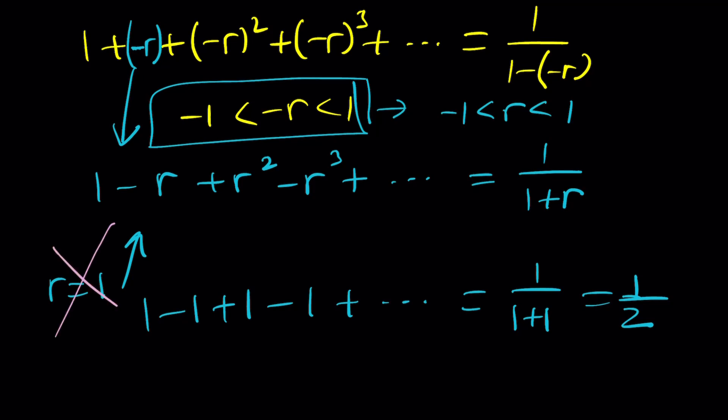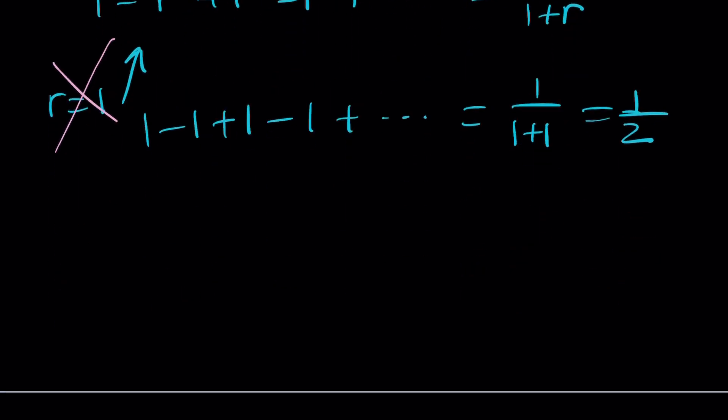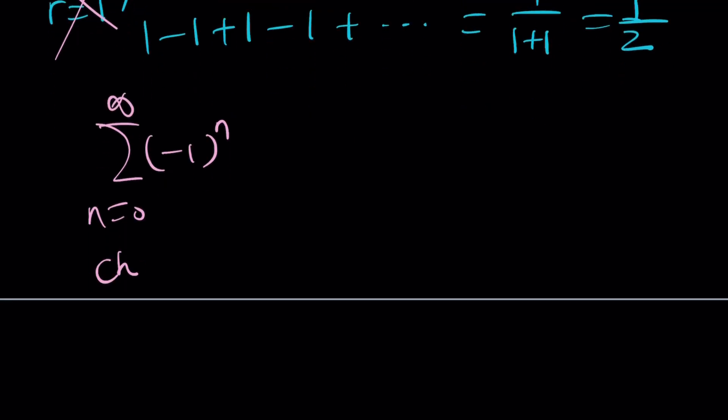None of these answers will work because let's take a look. Now, first of all, let's write our sum using the sigma notation. N equals 0 to infinity, negative 1 to the power n. Obviously, there's more than one way to do it. This is an infinite series.